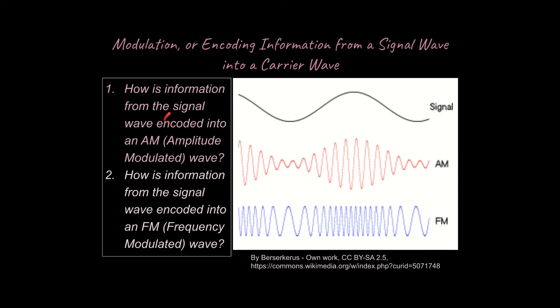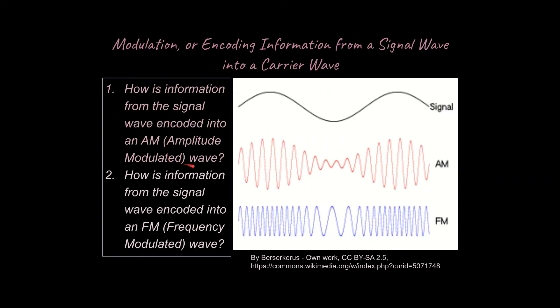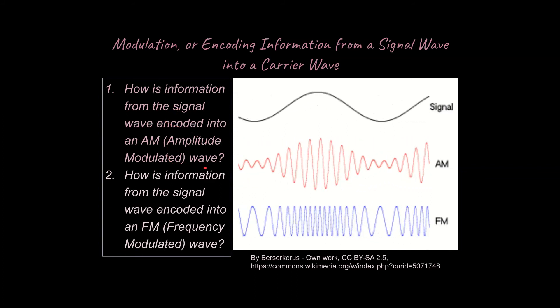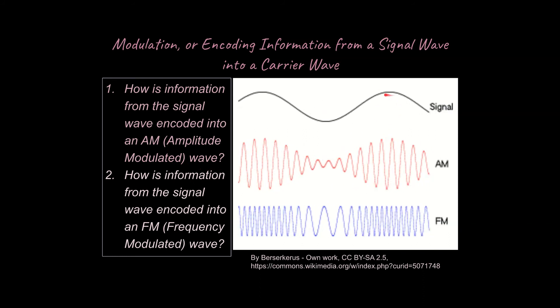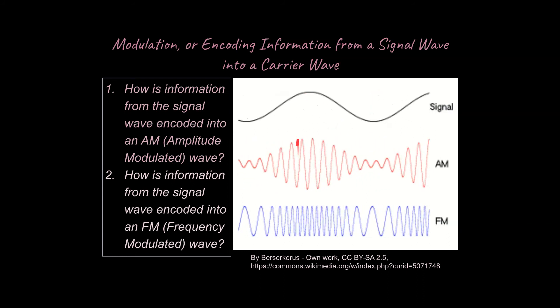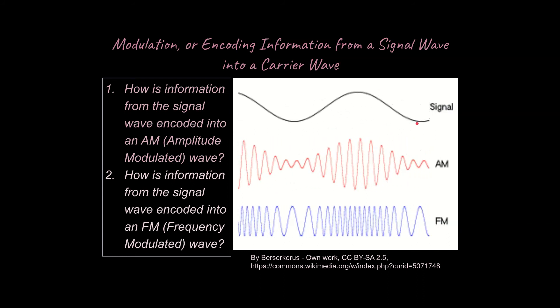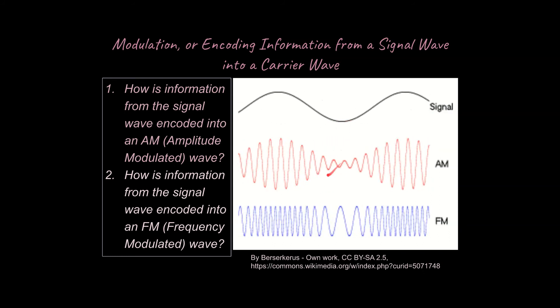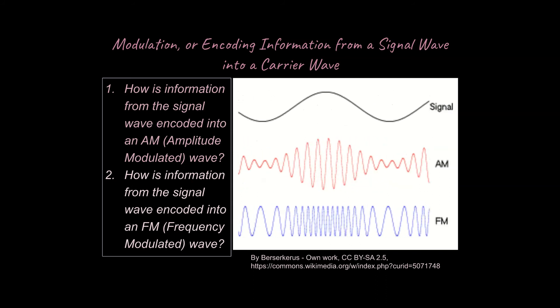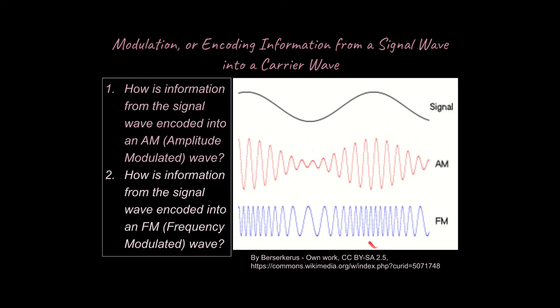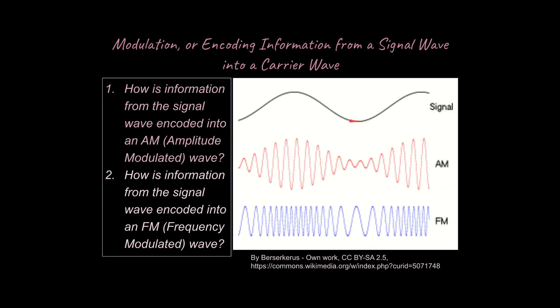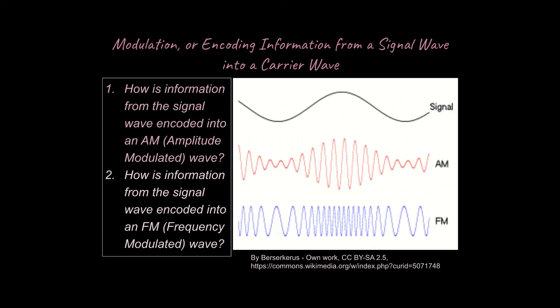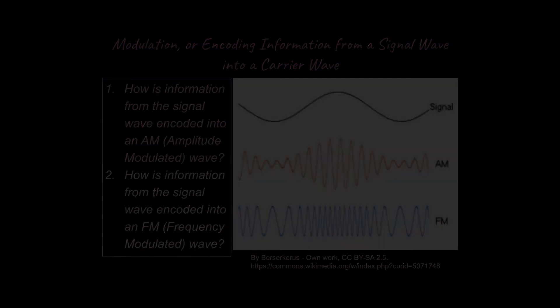All right, so just to recap, how is information from the signal wave encoded into an AM wave, an amplitude modulated wave? We could say that crests are transmitted as greater amplitude in the AM waves, and troughs are represented as lesser amplitude in the AM waves. For a FM wave, you can see in this animation here that crests correspond to a greater frequency, and troughs correspond to a lesser frequency for an FM wave.